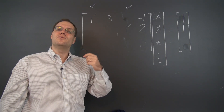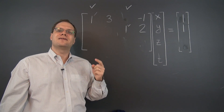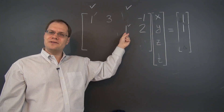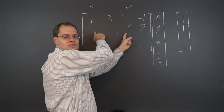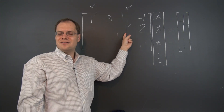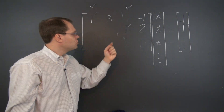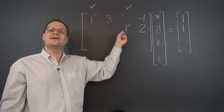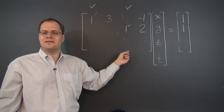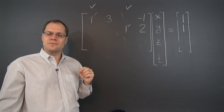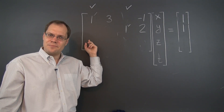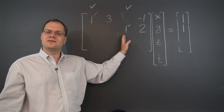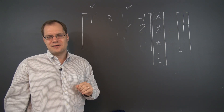Here is the insight as to which columns become pivot columns: they are the columns that are linearly independent from the columns that came before them. A pivot is always the first non-zero entry in its row — everything else has been eliminated. It therefore necessarily makes its column linearly independent from the columns before it. If you tried to represent it as a linear combination of prior columns, where would the pivot come from? So pivot columns are necessarily linearly independent from the columns that came before them.